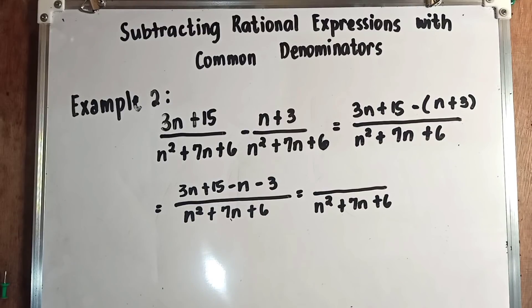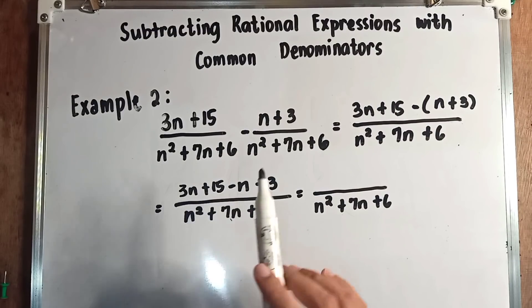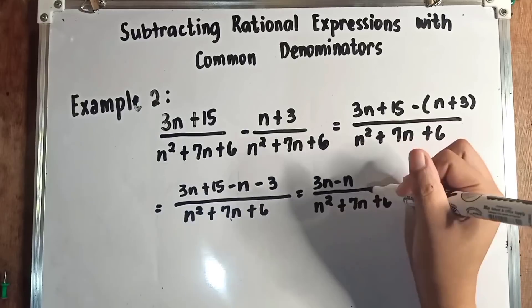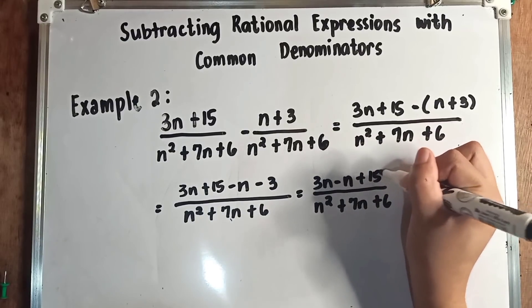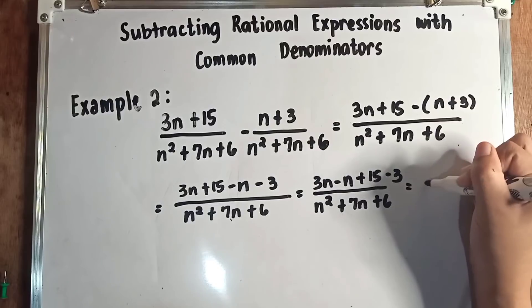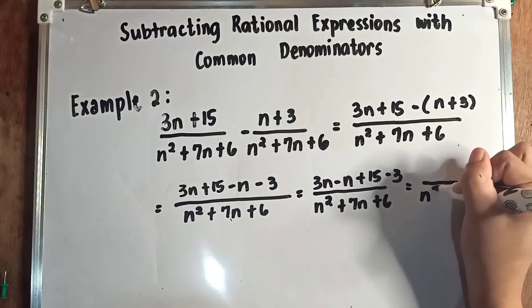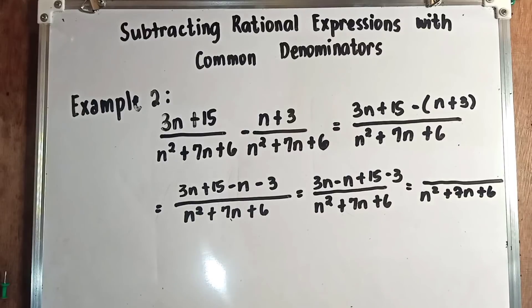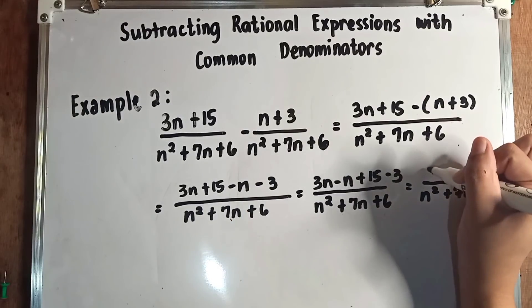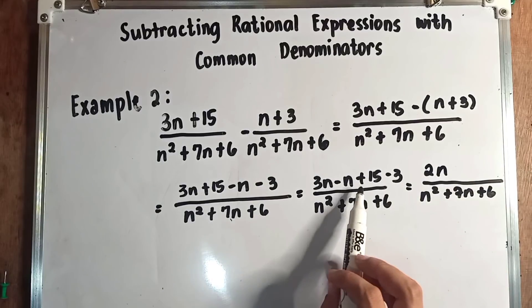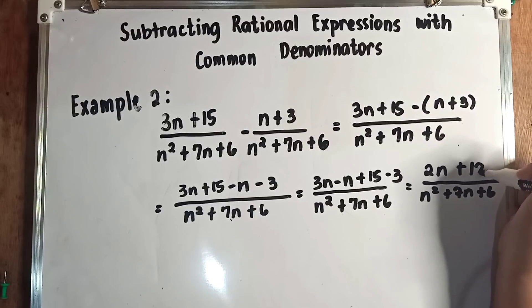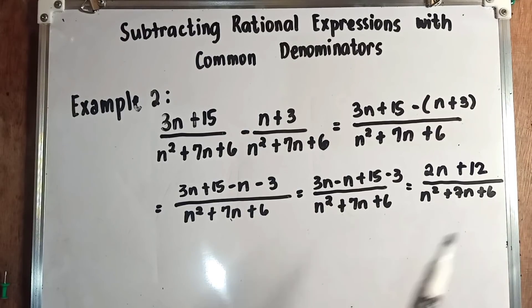We combine like terms: 3n minus n, and plus 15 minus 3. The denominator stays n squared plus 7n plus 6. So 3n minus n gives 2n, and 15 minus 3 gives 12, giving us 2n plus 12 over n squared plus 7n plus 6.